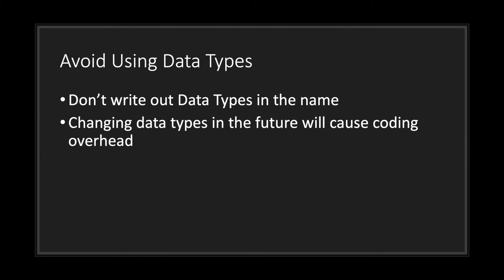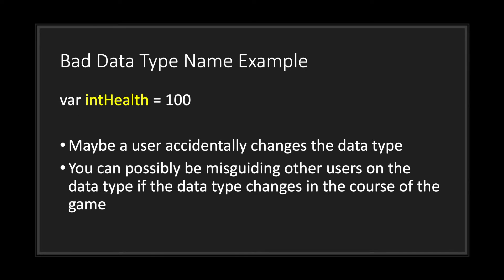One thing to keep in mind when naming your variables is to avoid writing data types in the name. This is due to the fact that if you decide to change the variable data type in the future, you will cause yourself a lot of headache. Let's take a look at this example.